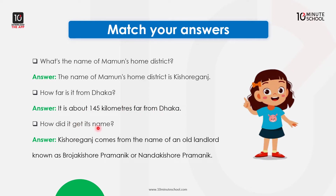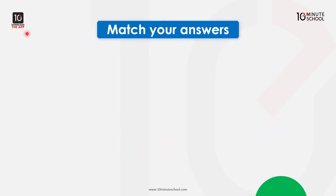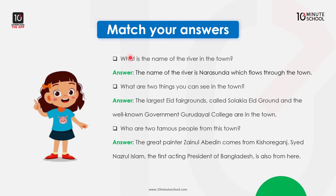How did it get its name? Kishorgonj comes from the name of an old landlord known as Brajo Kishor Pramanik. The largest Eid Fairgrounds, called Solakya Eid Ground, and the well-known Government Gurudoyal College are in the town.